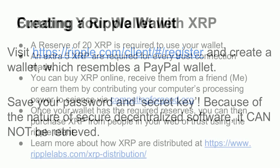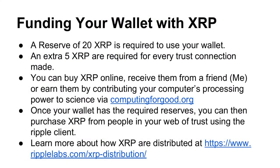To use the software, you need a reserve of 20 XRP in your wallet. If you don't have 20 XRP, you can't use the software at all. An extra 5 XRP are required for every trust connection that you make. You can buy XRP online or receive them from a friend. If any of you want to sign up and experiment, just send me your Ripple address — I'm happy to send you 20 XRP. It's only 25 cents for me. Or you can contribute your computer's processing power to science via computingforgood.org, and in exchange Ripple Labs will give you XRP.